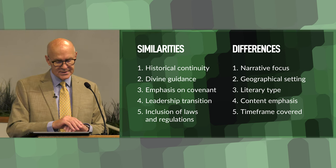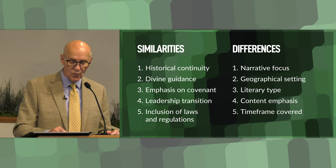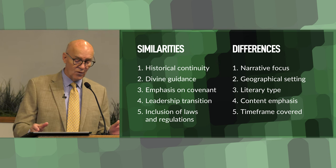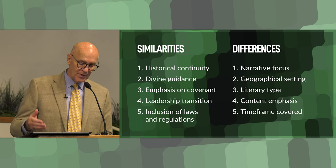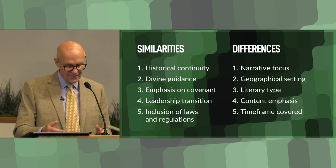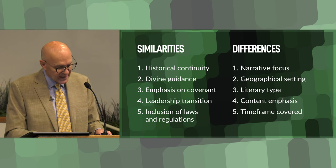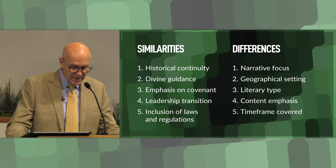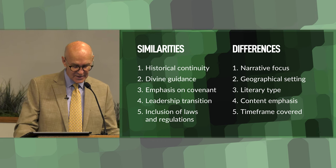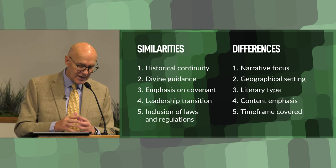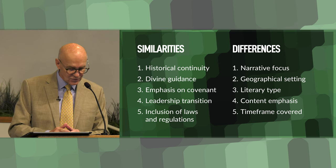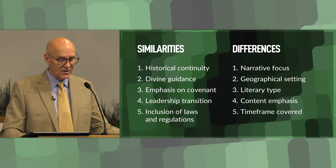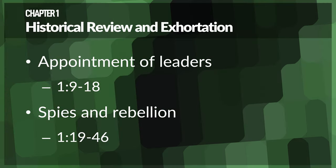Let's do a summary now of chapters one to four. Chapters one to four of the book of Deuteronomy involve Moses addressing the Israelites as they prepare to enter the promised land. These first four chapters are a blend of historical review, motivational discourse, and instruction, meant to prepare the people for their impending conquest and settlement. Here's an orderly explanation of the key events and instructions within these first four chapters, along with their significance, beginning with chapter one.